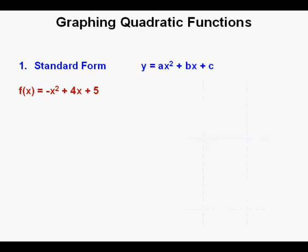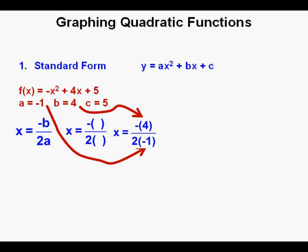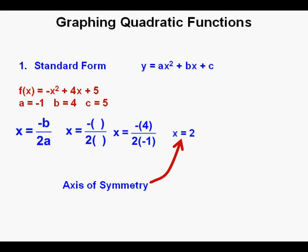Let's graph another function in standard form: f of x equals negative x squared plus 2x plus 5. This gives us an a of negative 1, a b of 4, and a c of negative 5. To find the axis of symmetry, we use the x equals negative b over 2a formula. I like using a form with open parentheses for a and b to avoid sign errors — especially when using the quadratic formula. Here with a equals negative 1 and b equals 4, that simplifies to x equals 2.